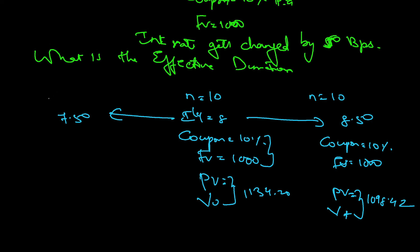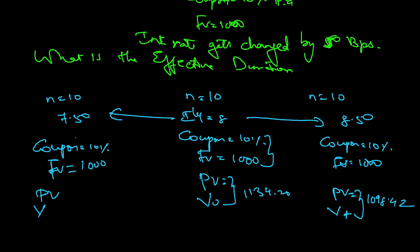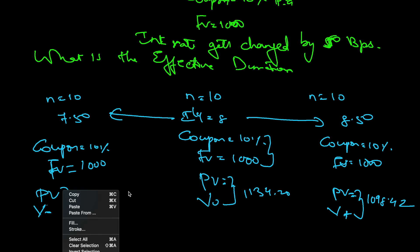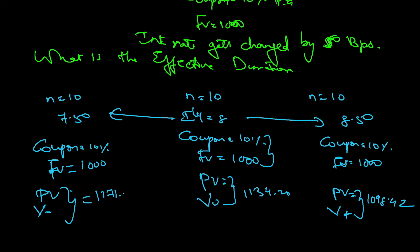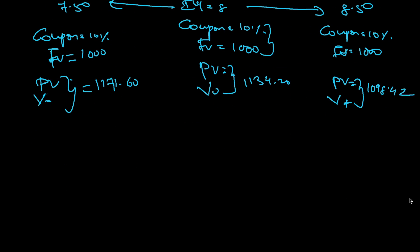Similarly, if the interest rate comes down by 50 basis points, IY becomes 7.50%, N is 10, coupon is 10%, future value is 1000. Computing the present value in this case — which is V-minus, the price when interest rate comes down — gives 1171.60. So we now have V-zero, V-plus, and V-minus to plug into the formula.